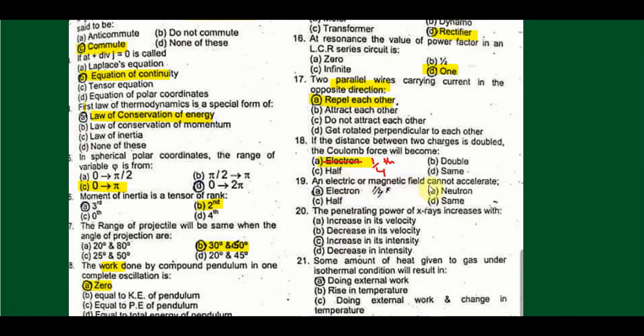The electric or magnetic field cannot accelerate: neutron, because it's a neutral particle. So you cannot accelerate a neutron with the help of electric or magnetic field.